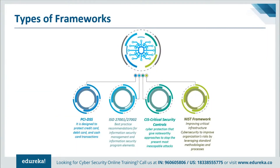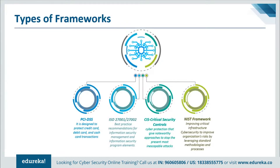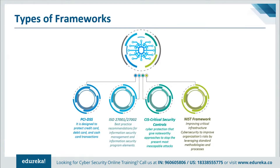Let's see the types of cybersecurity frameworks. The first type is PCI DSS, which stands for Payment Card Industry Data Security Standards. It is a set of security controls required to implement protected payment account security, designed to protect credit cards, debit cards, and cash card transactions. The second type is ISO 27001 and 27002, from the International Organization for Standardization.